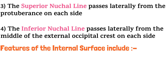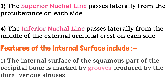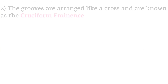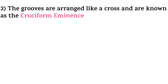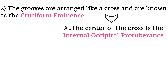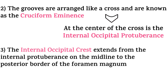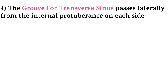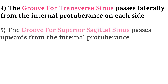Features of the internal surface include: the internal surface of the squamous part is marked by grooves produced by the dural venous sinuses. The grooves are arranged like a cross and are known as the cruciform eminence. At the center of the cross is the internal occipital protuberance. The internal occipital crest extends from the internal protuberance on the midline to the posterior border of the foramen magnum. The groove for the transverse sinus passes laterally from the internal protuberance on each side, and the groove for the superior sagittal sinus passes upwards from the internal protuberance.